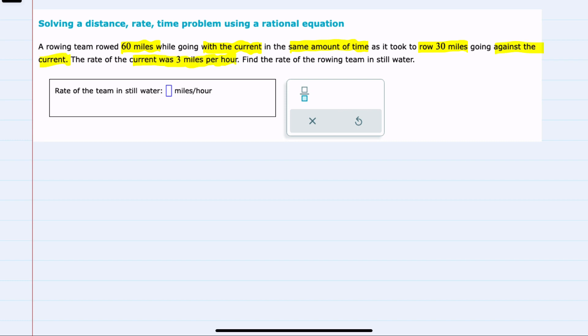We're also told that the current of the river is 3 miles per hour, and we're going to try to find the rate of the rowing team in still water.